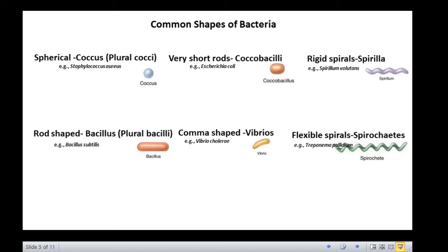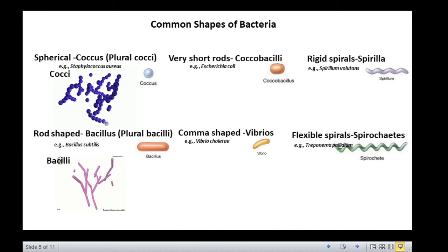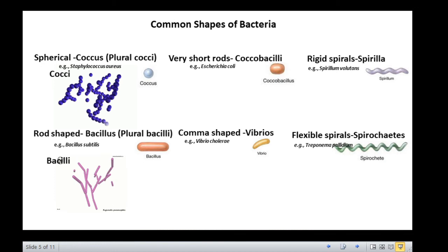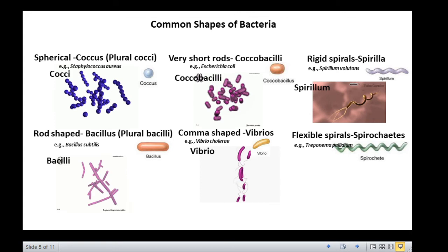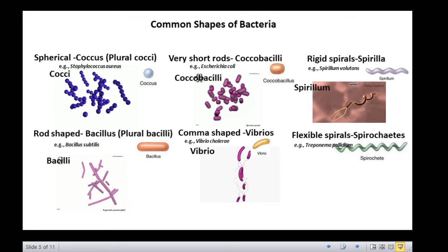Let us quickly revise the common shapes of bacteria once again. The spherical bacteria are called cocci. The rod-shaped bacteria are called bacilli, and oval-shaped bacteria are called coccobacilli. Further, comma-shaped bacteria are called vibrios. Rigid spirals are known as spirilla, and flexible spirals are called spirochetes.